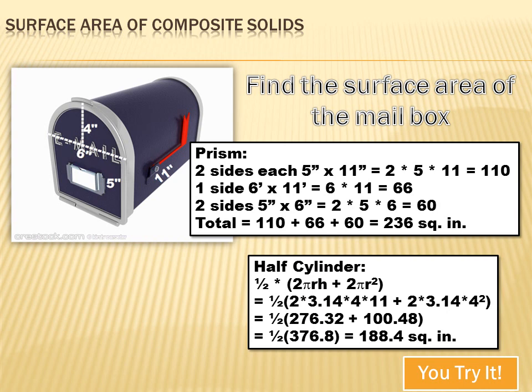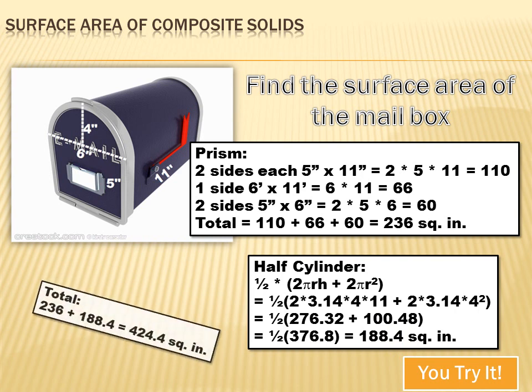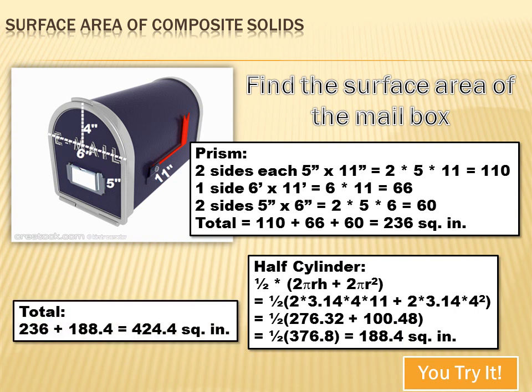Now all that's left to do is add those two composite portions up: 236 plus 188.4 equals 424.4 square inches.